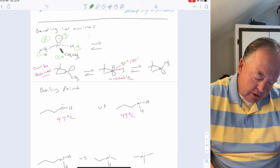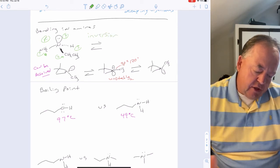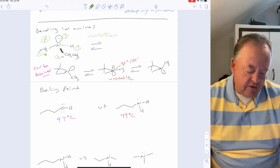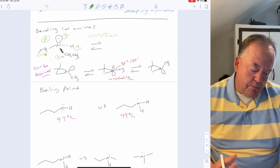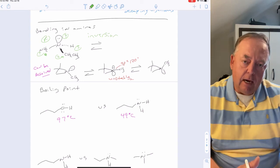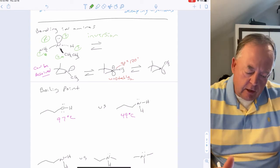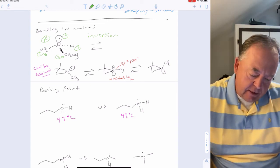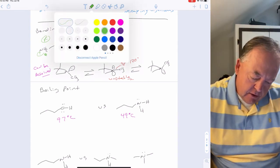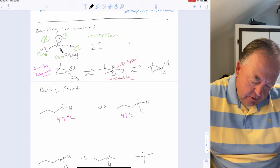Nitrogen inversion works like an umbrella flipping inside out in a burst of wind — the amine inverts rapidly, interconverting the R and S forms.